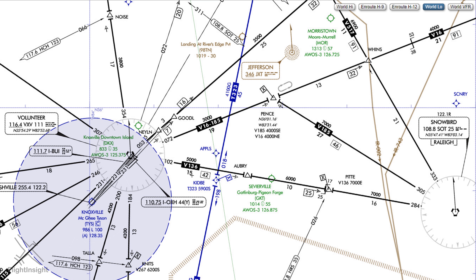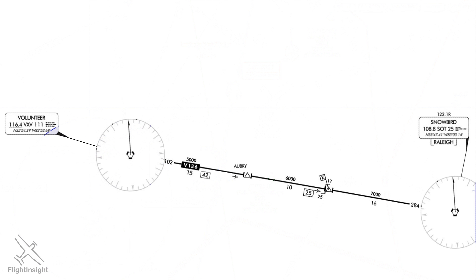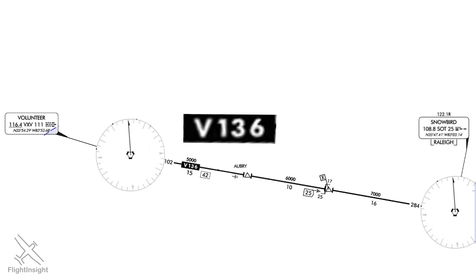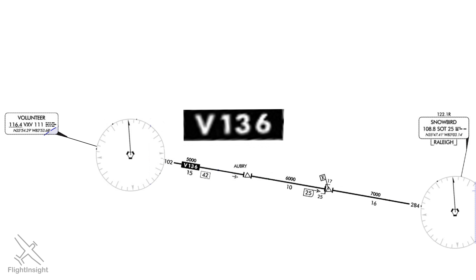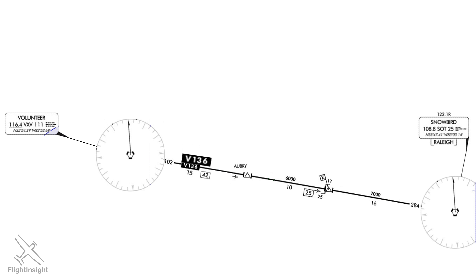Other nav aids that you'd expect to see are depicted on the chart as well. Here's the Jefferson NDB. Sometimes the en route chart will depict this racetrack pattern noting that a holding procedure is present at this point, the Pence fix. ATC can assign this hold to aircraft, which can then reference how to enter and fly the hold as it's published here.